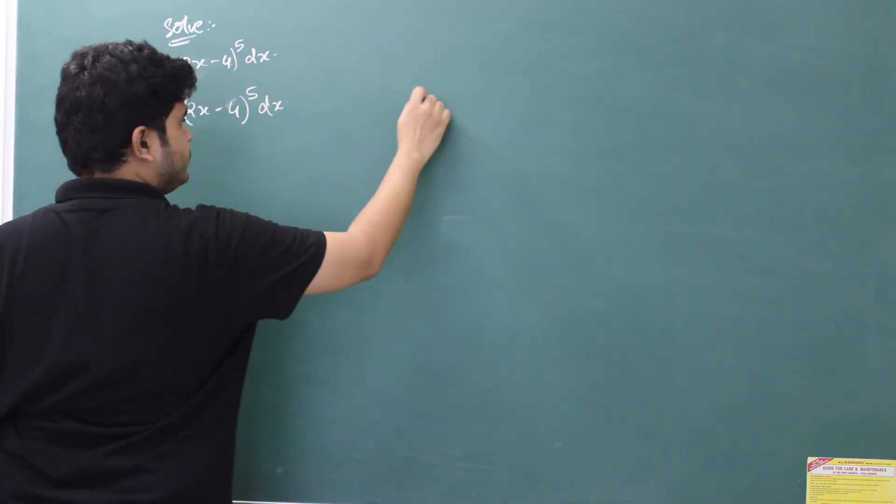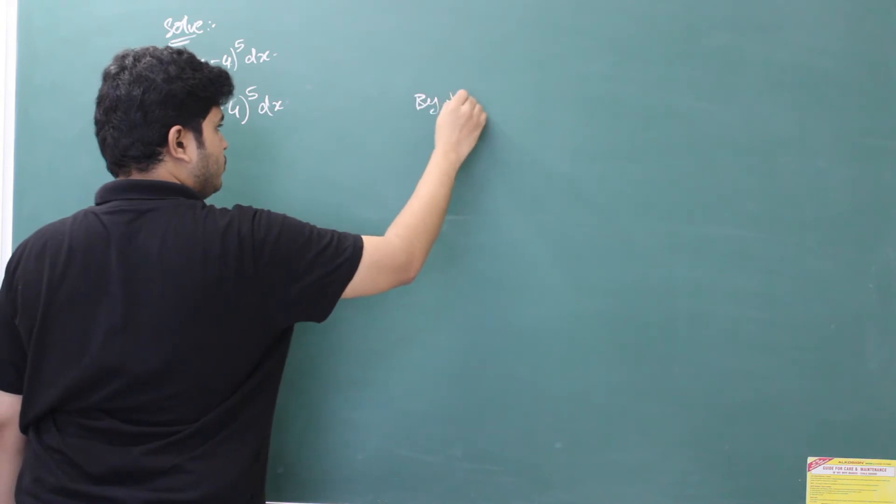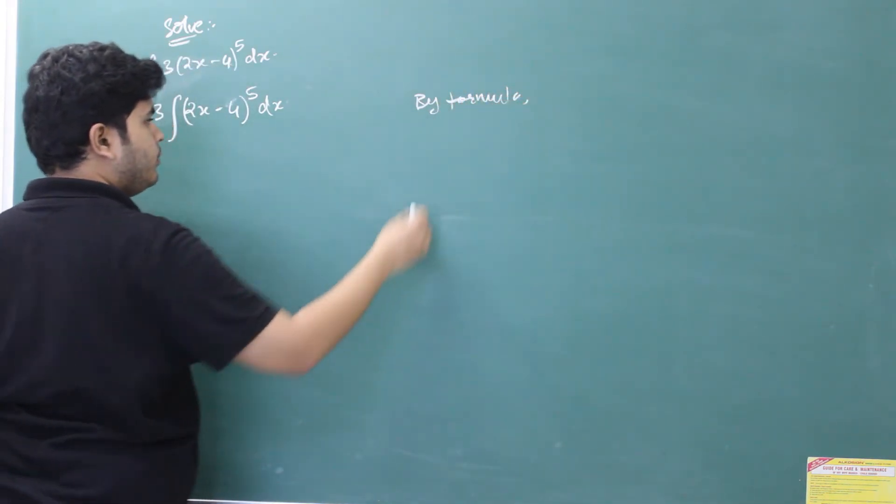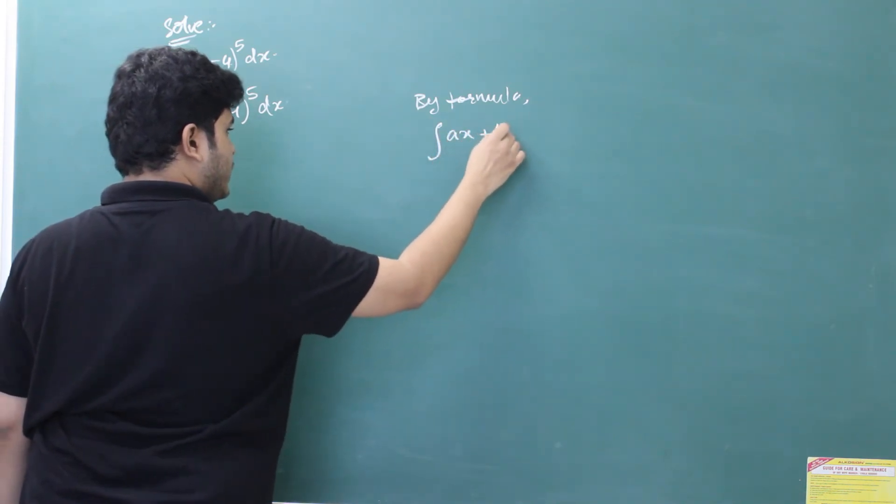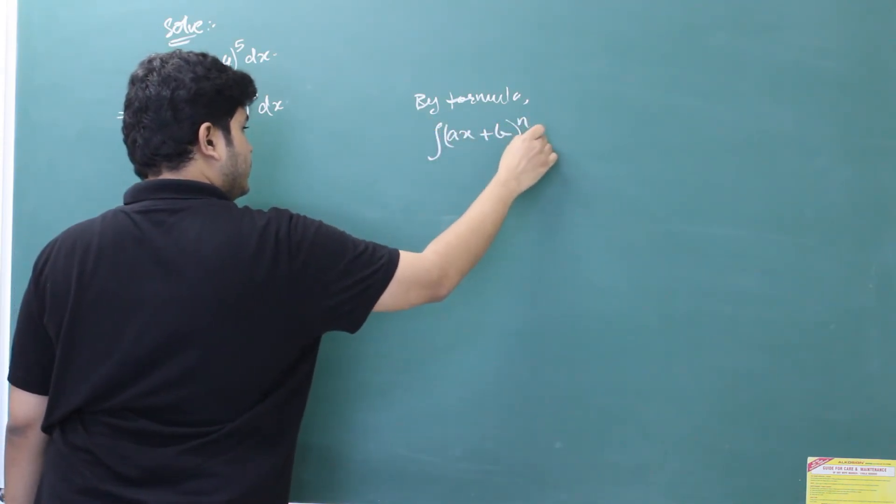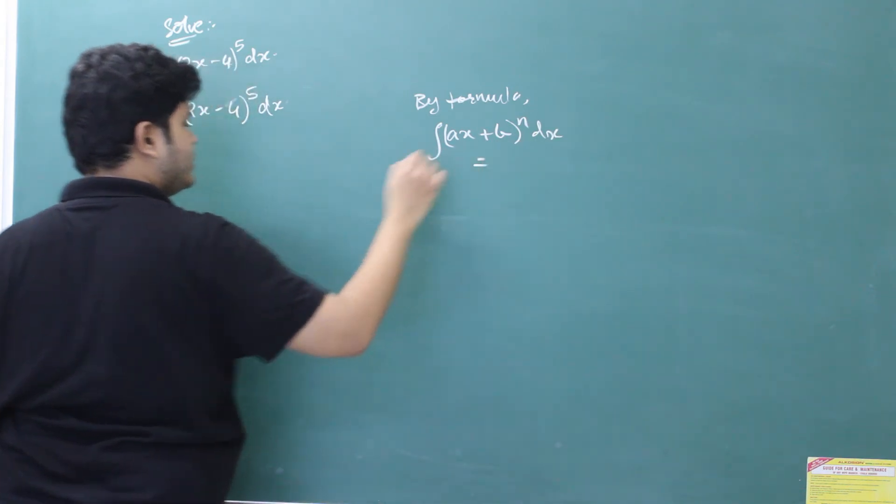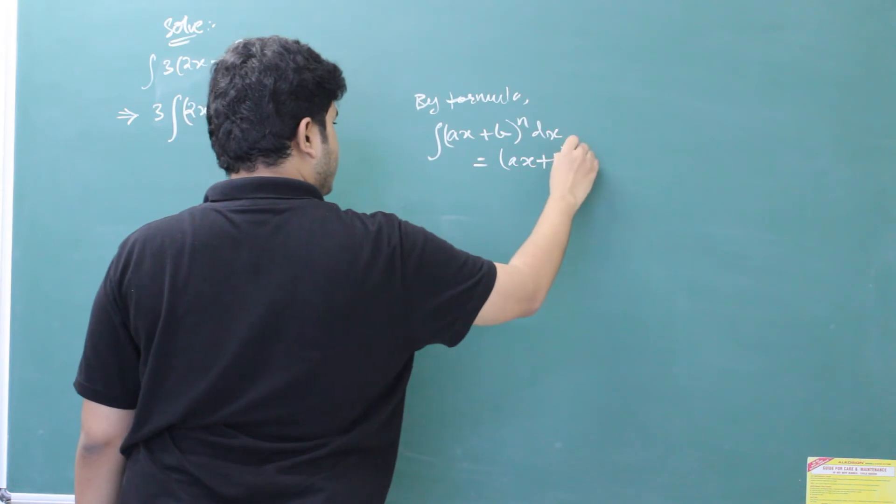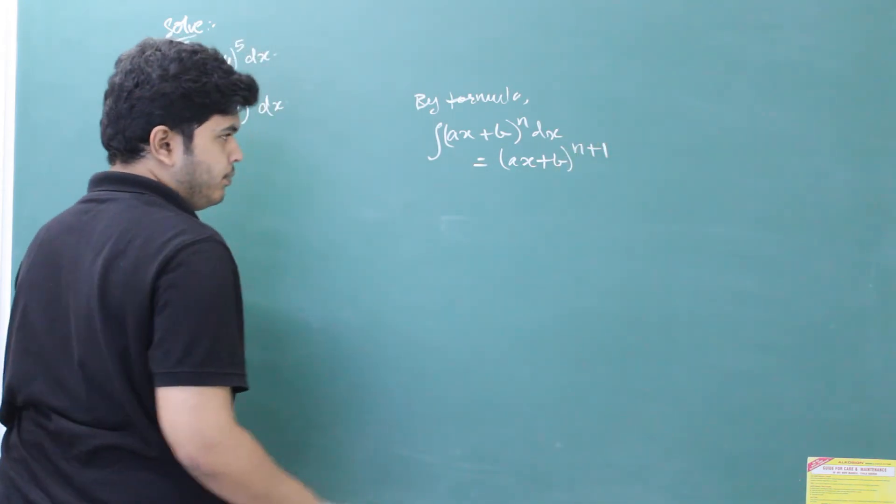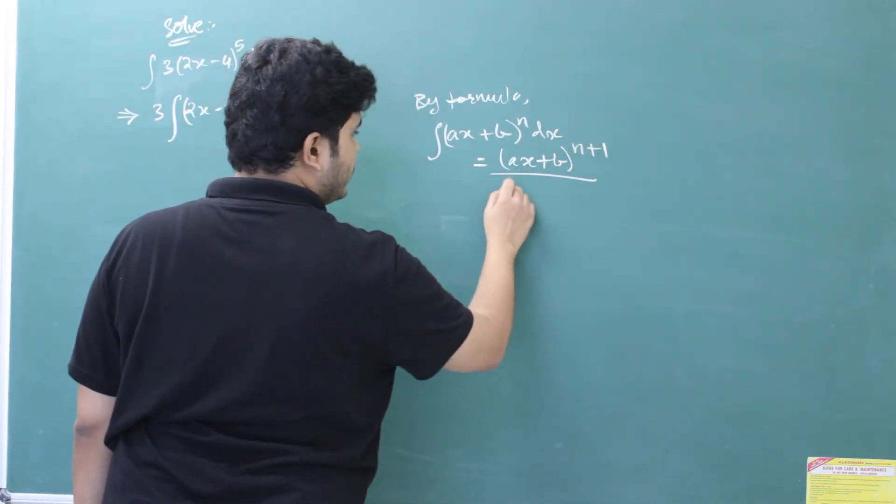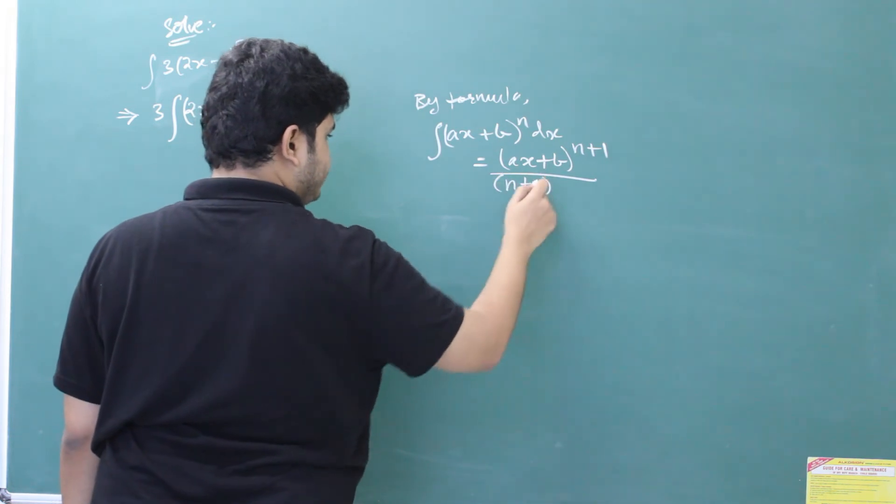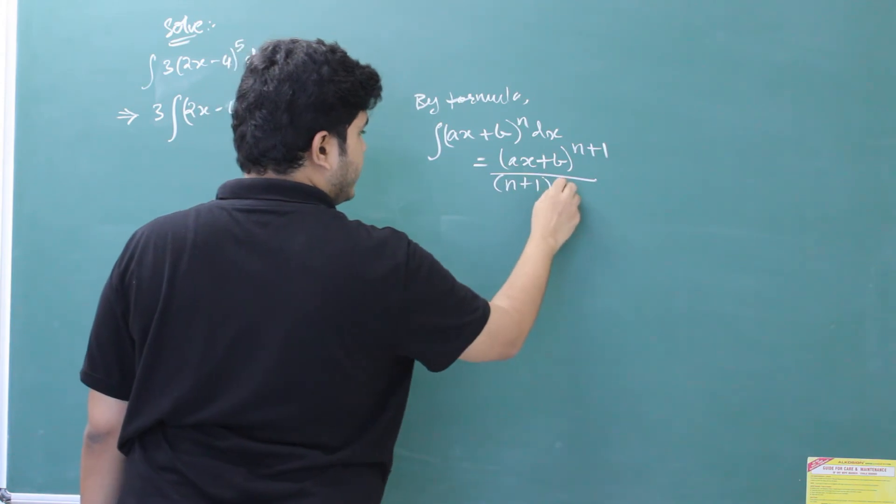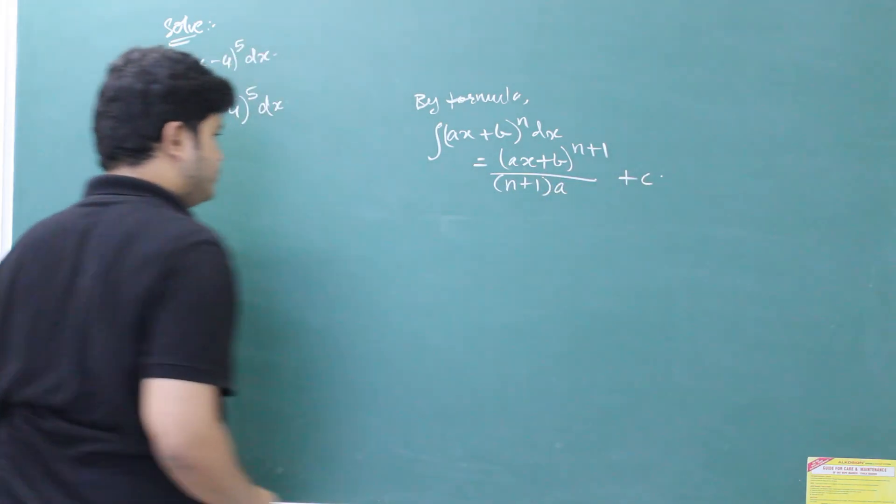Now by formula, it is of the type ax plus b to the power n dx. And how do you integrate with this type? ax plus b to the power n, you add 1 in the power, and then you divide with the new power, that is n plus 1. After that, you have to multiply with coefficient of x, that is a. Plus c.